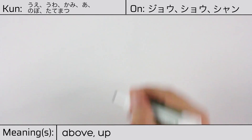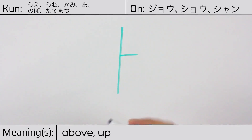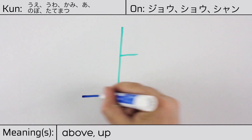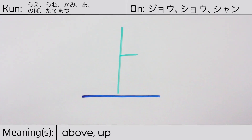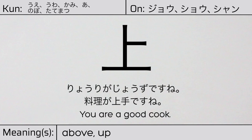You can remember this Kanji by the following hint: The fortune teller knows everything on earth. Our example sentence is: Riori ga jousu desu ne. You are a good cook.